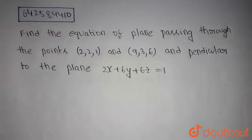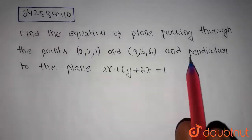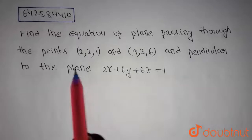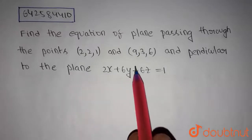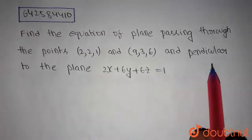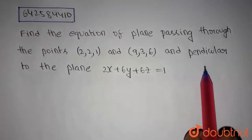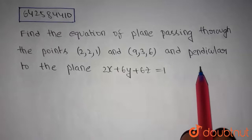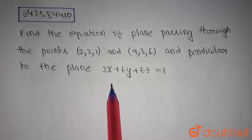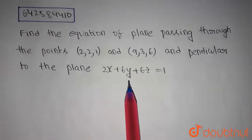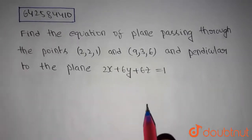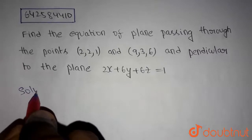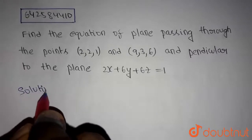Hello guys, this is our today's question. We have to find the equation of the plane passing through the points (2, 2, 1) and (9, 3, 6) and perpendicular to the plane 2x + 6y + 6z = 1. Let's get into the solution.